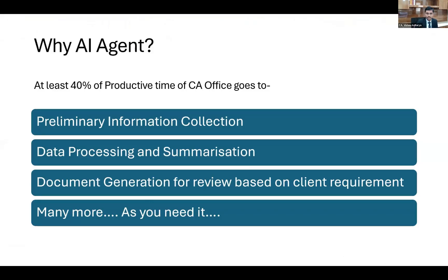Why do we need an AI agent? In CA office operational work, at least 40% of our productive time goes to these actions. First is preliminary information collection based on our preliminary interaction with the client — collecting information regarding their service requirement date, basic details, and so on. This is done either by the auditor, the chartered accountant, or a designated staff member in your firm.